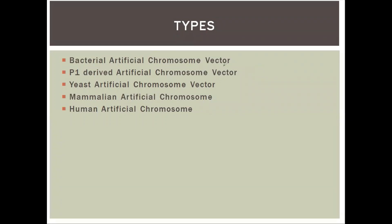There are more than one type of Artificial Chromosome Vector. These include the Bacterial Artificial Chromosome (BAC), the Yeast Artificial Chromosome (YAC), the Mammalian Artificial Chromosome (MAC), and the Human Artificial Chromosome (HAC).